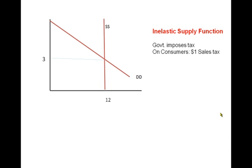Let's look at this case when the supply function is completely inelastic and we have a vertical supply function. The equilibrium price and equilibrium quantity are 3 and 12. Let's assume government imposes a sales tax on consumers of $1. What this does is shifts the demand function down vertically by the amount of the tax, which is $1.